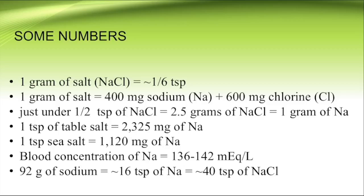The percentage of salt in our bodies is very close to that of the ocean, which, according to one theory at least, is where we evolved from, so that makes intuitive sense. The body content of sodium in an average adult male is 92 grams, with about half of that located in the extracellular fluid at a concentration between 136 and 142 milliequivalents per liter. 92 grams of sodium is the equivalent of about 16 teaspoons of sodium, or about 40 teaspoons of salt.